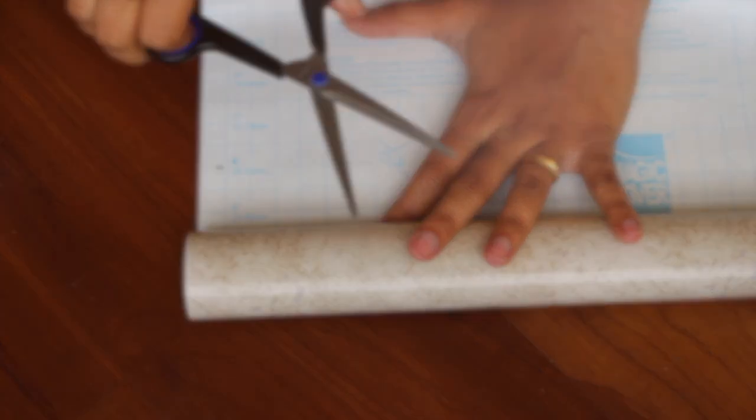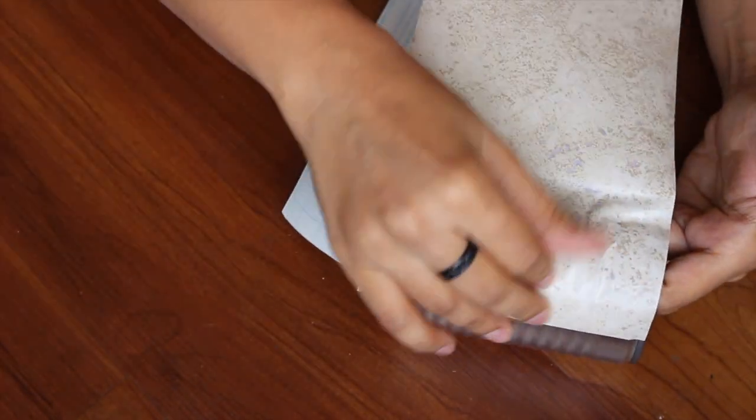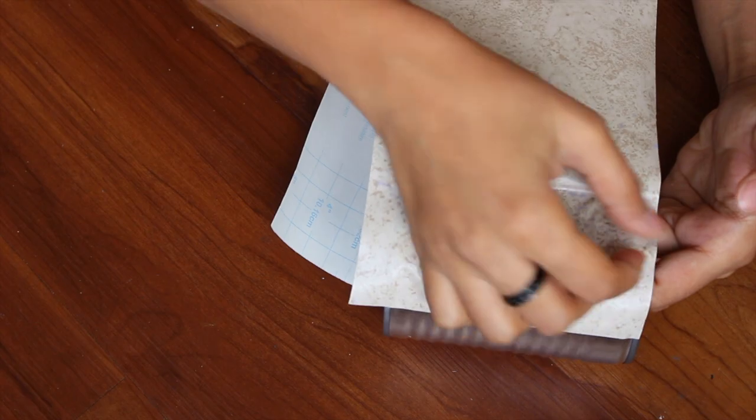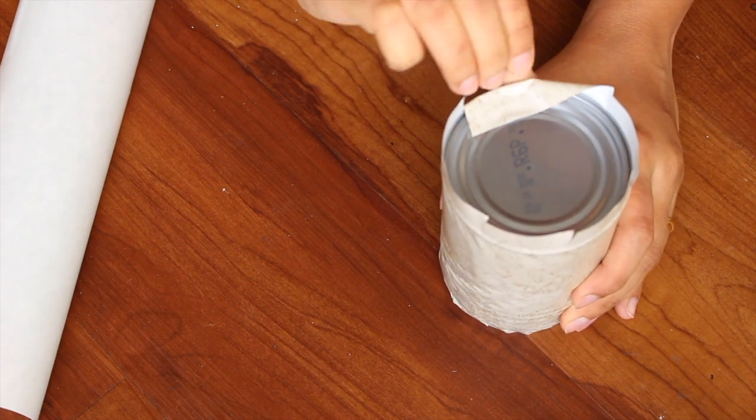So as you can see, I'm marking and cutting it off. What I'm doing here is removing the adhesive part and attaching it to the tin like this. You can always use spray paint for this project as well, but I'm using contact paper.